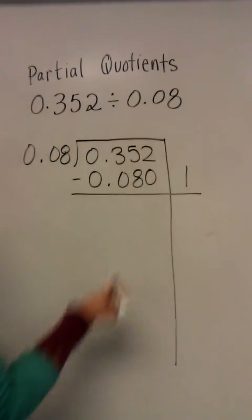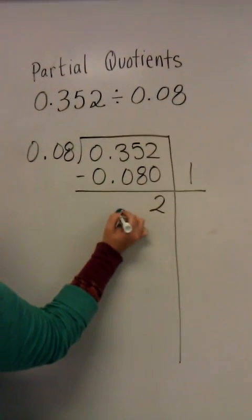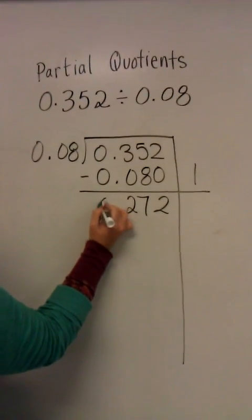I can put this zero in but I don't have to. I'll go ahead and subtract and I'll end up with 272 thousandths.